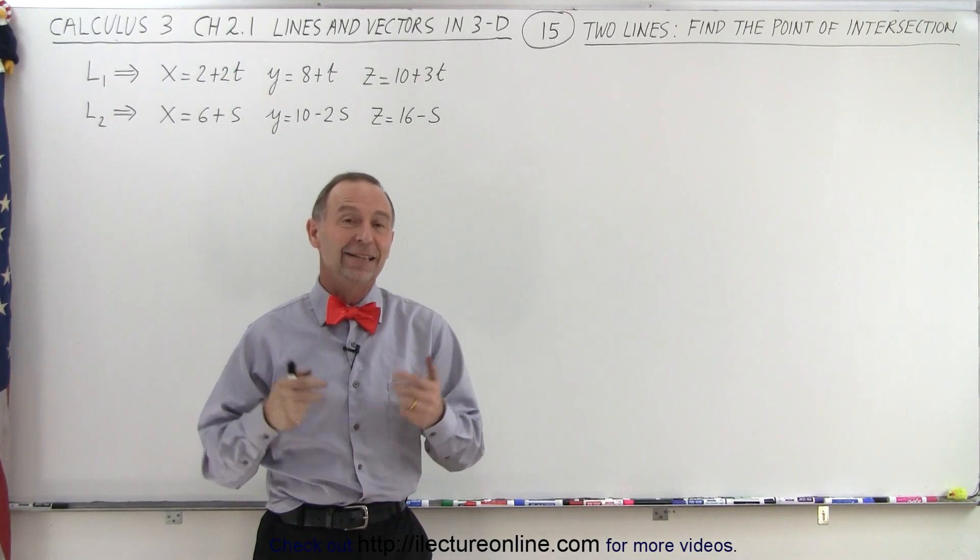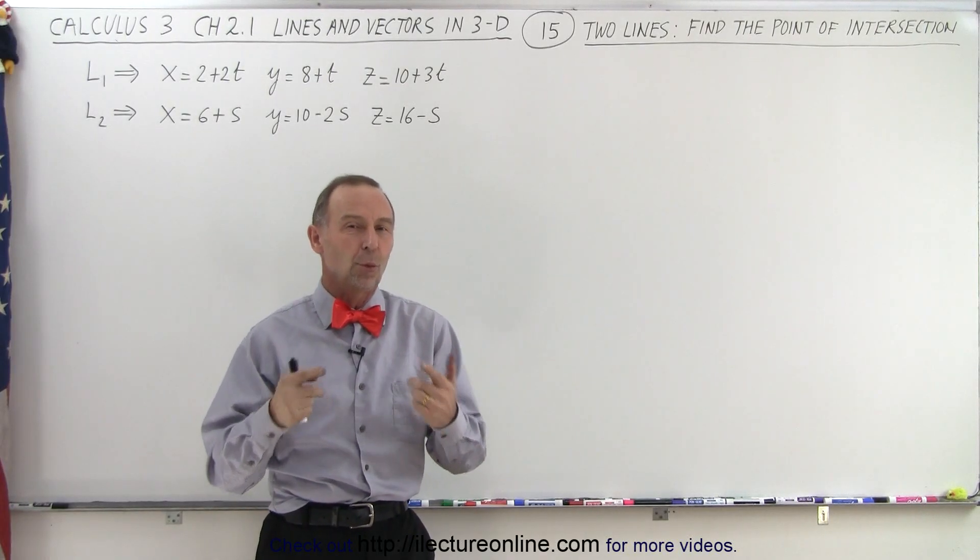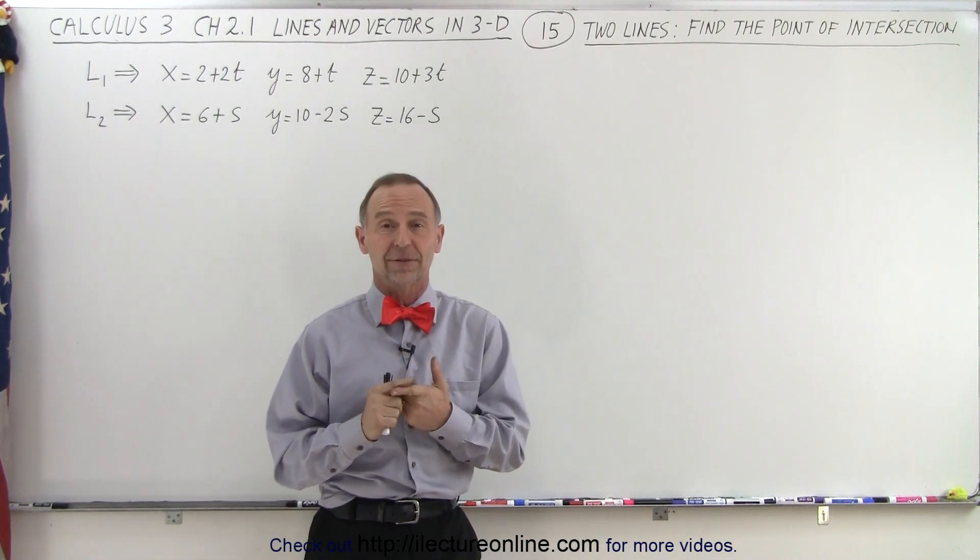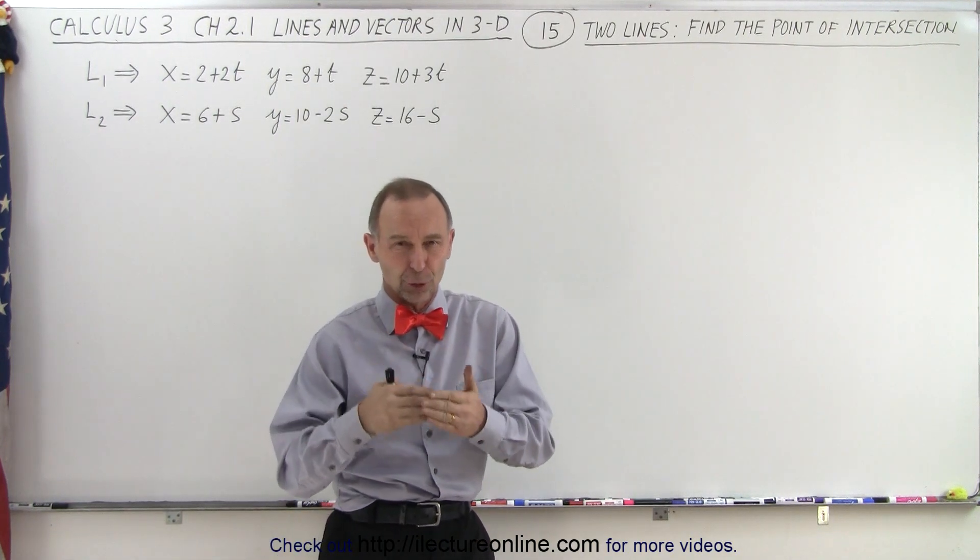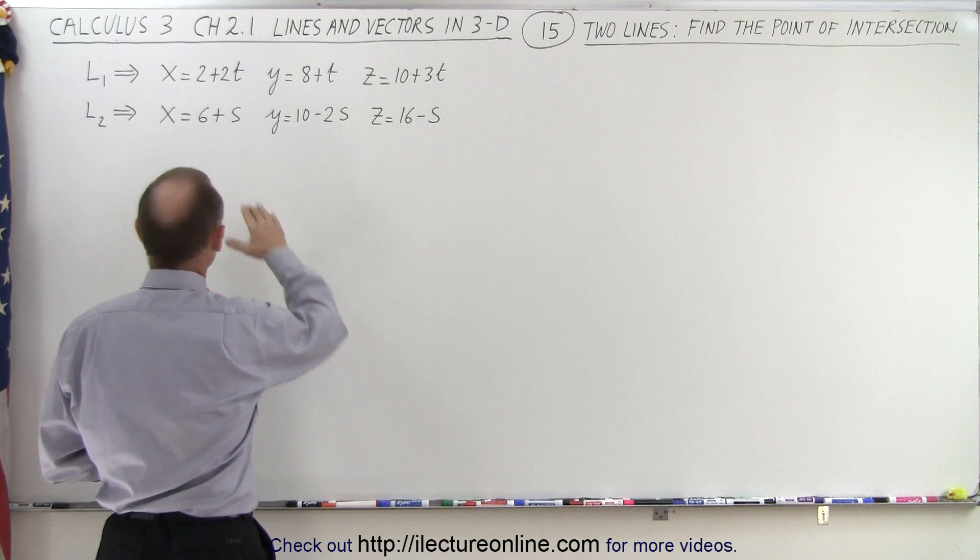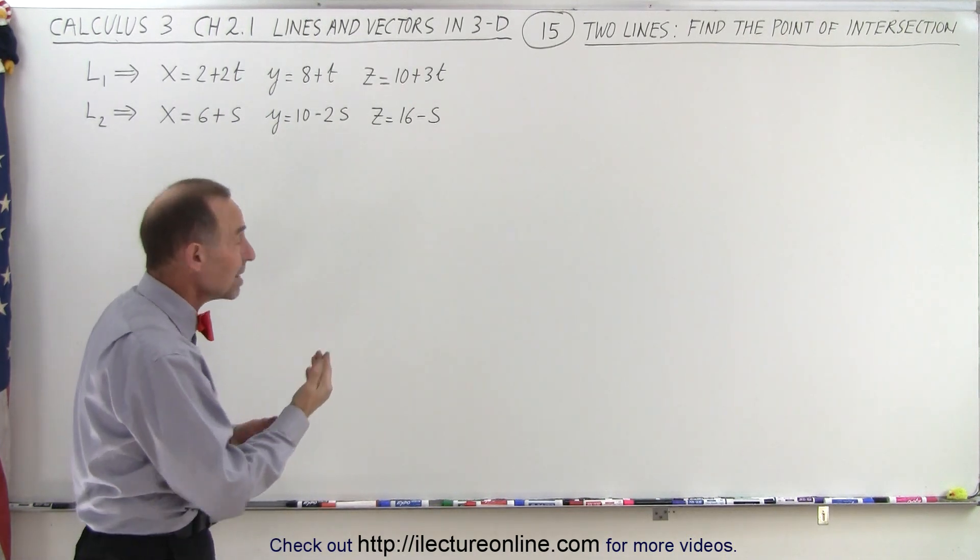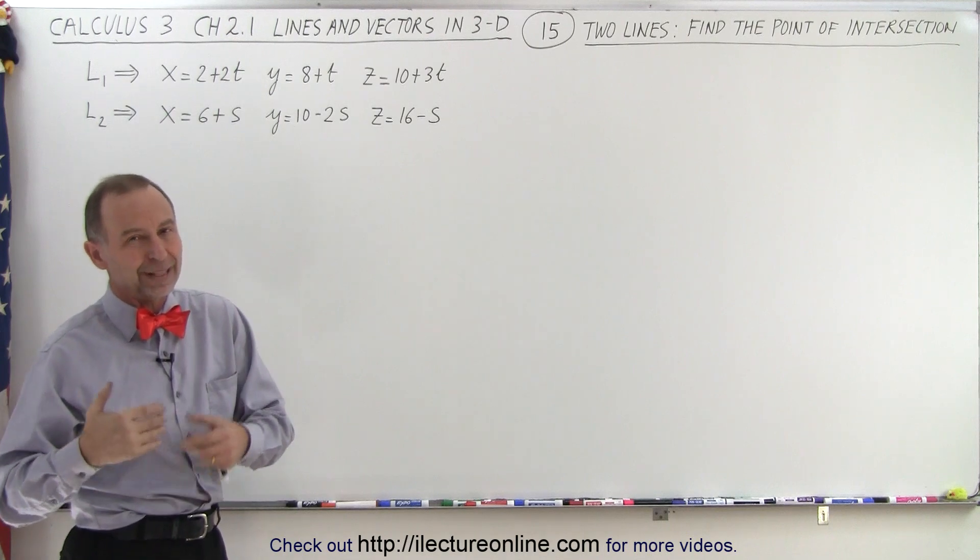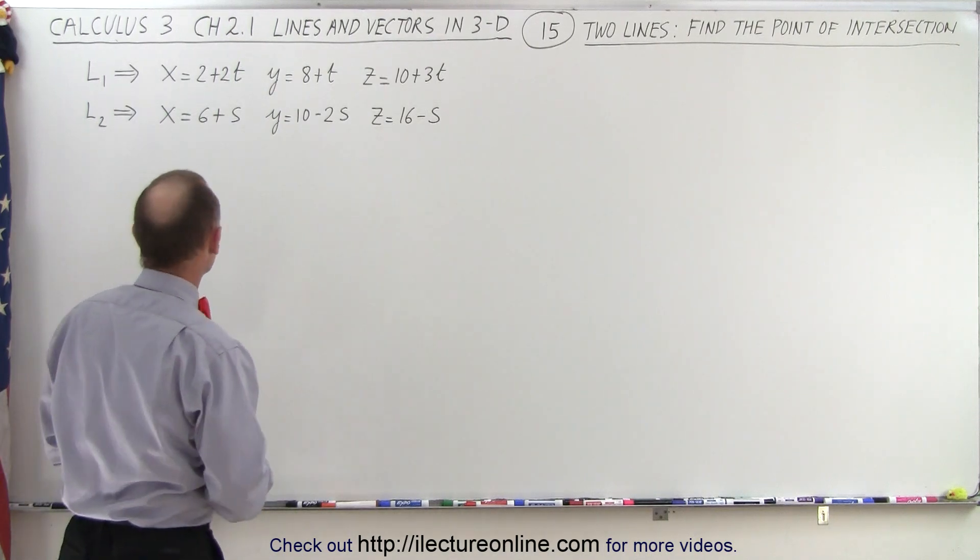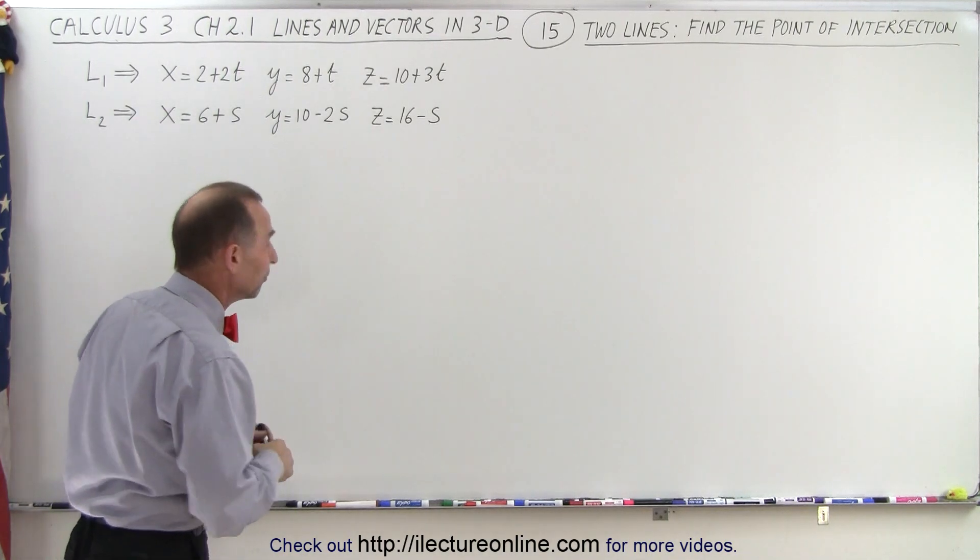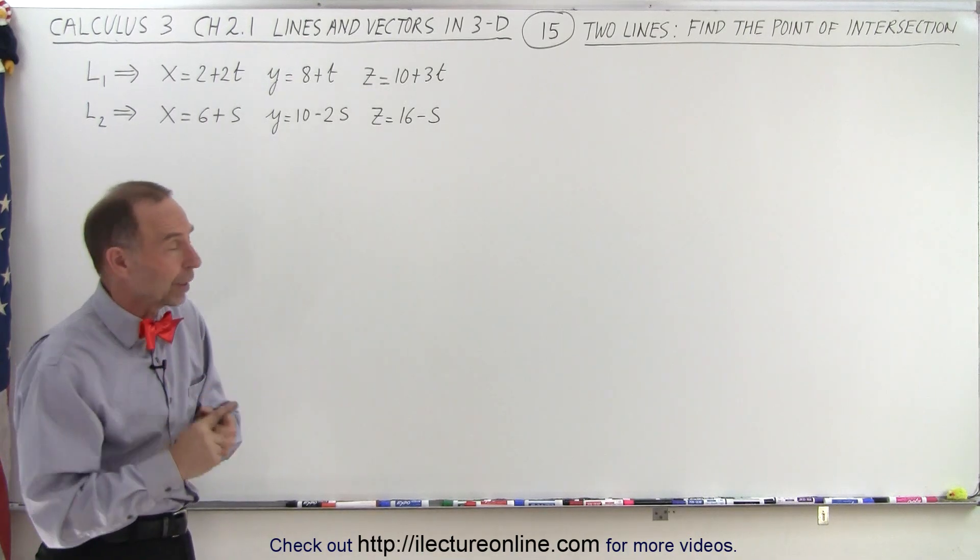Welcome to ElectronLine. In this video, we're going to determine where two lines intersect, and we presume, of course, that they do. Here are the two sets of parametric equations. Notice that for the first line we use t, and for the second line we use the variable s for the parametric equations. They're definitely representative of two different lines, and we presume that they cross somewhere.